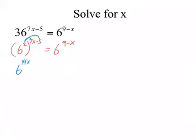So you now have 6 to the 14x minus 10 equals 6 to the 9 minus x. Now, since they both have the same base to make this equal to this, aren't the powers going to have to be equal? So all I'm going to do now is set my powers equal, which is 14x minus 10 equals 9 minus x.